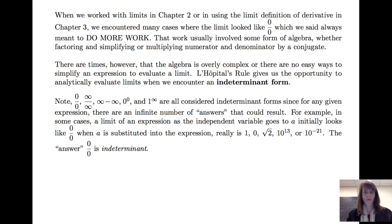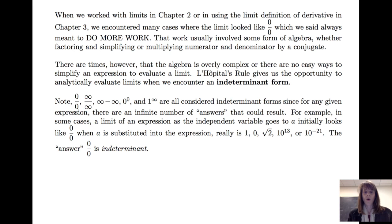Now what's an indeterminate form? Well, 0 over 0, infinity over infinity, infinity minus infinity, 0 to the 0, and 1 to the infinity are all considered indeterminate forms. For any of these expressions, there are an infinite number of possible answers that could result. So sometimes, any time we use the limit definition of derivative, technically we would get 0 over 0. And we know that the value of the derivative can take on an infinite number of answers — whether that be 1, 0, square root of 2, 10 to the 13, 10 to the negative 21st, and so on. So therefore we say that 0 over 0 is indeterminate.